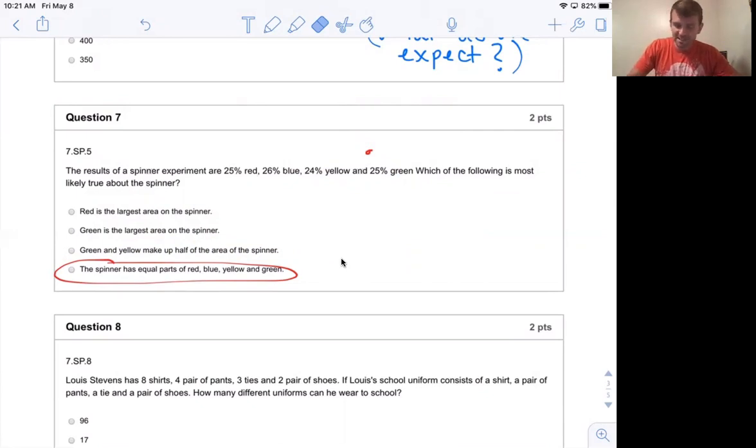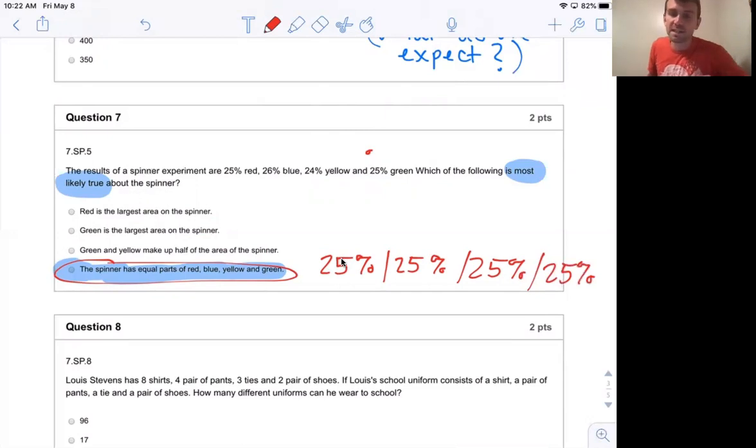The answer is going to be the spinner has equal parts of red, blue, yellow, and green. And why is that the answer? I don't love this question to be honest with you, but just to get you exposed to difficult questions like this and get you to see what the question is looking for. The key is which is most likely true. And this one is most likely true because it has more information about all four of the colors, so that the spinner has equal parts of red, blue, green, and yellow. So that means there's 25% of each of those. This choice has more information about all of the colors. And that's kind of the best explanation I can give for that one.